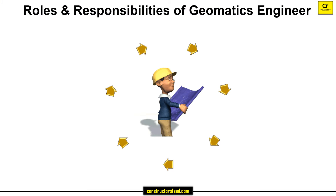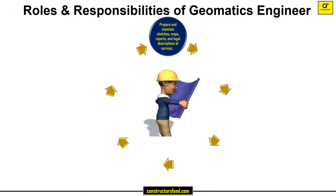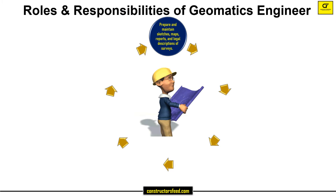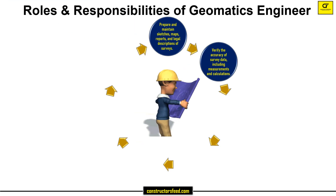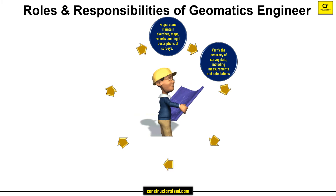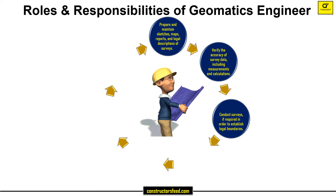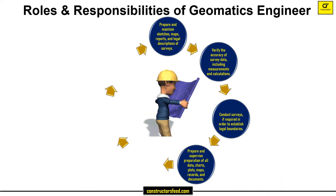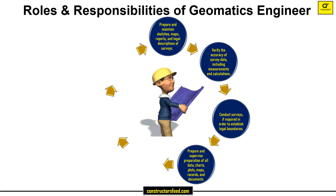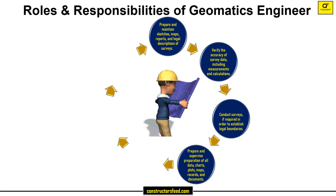Some of the roles and responsibilities of a Geomatics Engineer: Prepare and maintain sketches, maps, reports, and legal descriptions of surveys. Verify the accuracy of survey data, including measurements and calculations. Conduct surveys, if required, in order to establish legal boundaries. Prepare and supervise preparation of all data, charts, plots, maps, records, and documents.